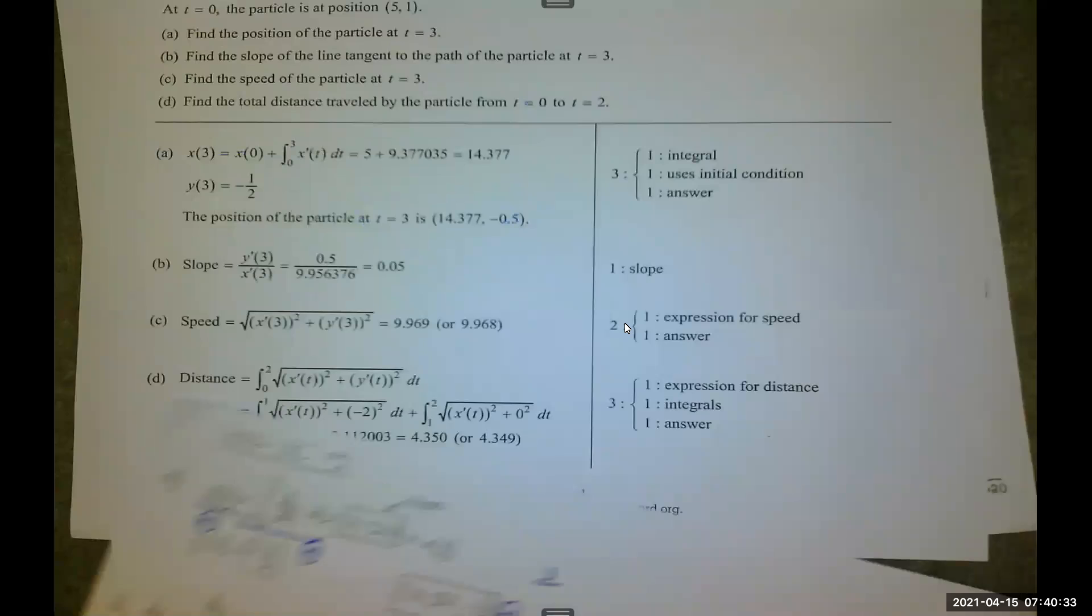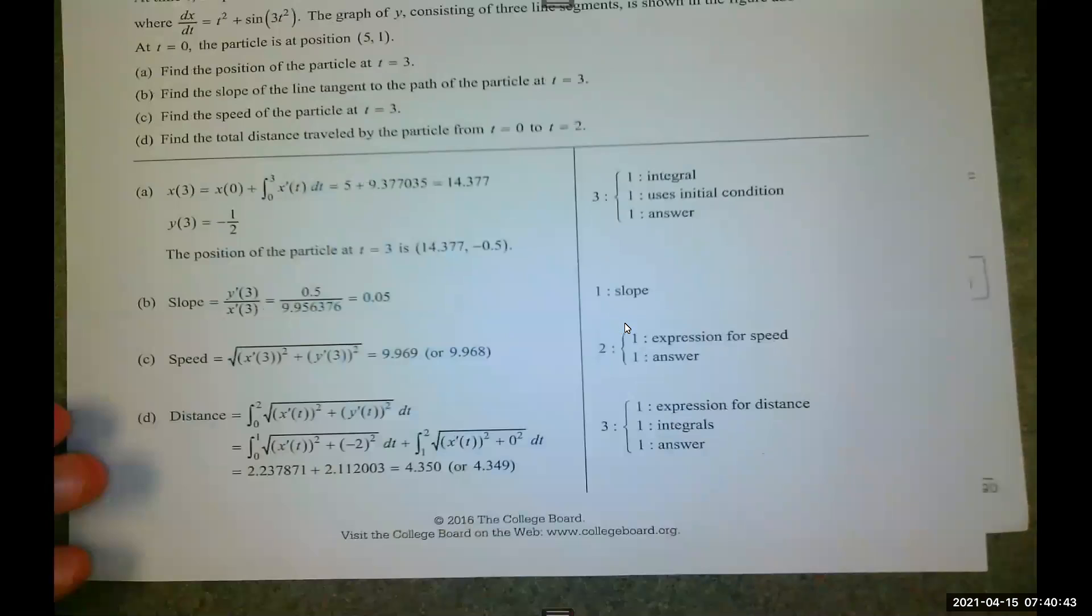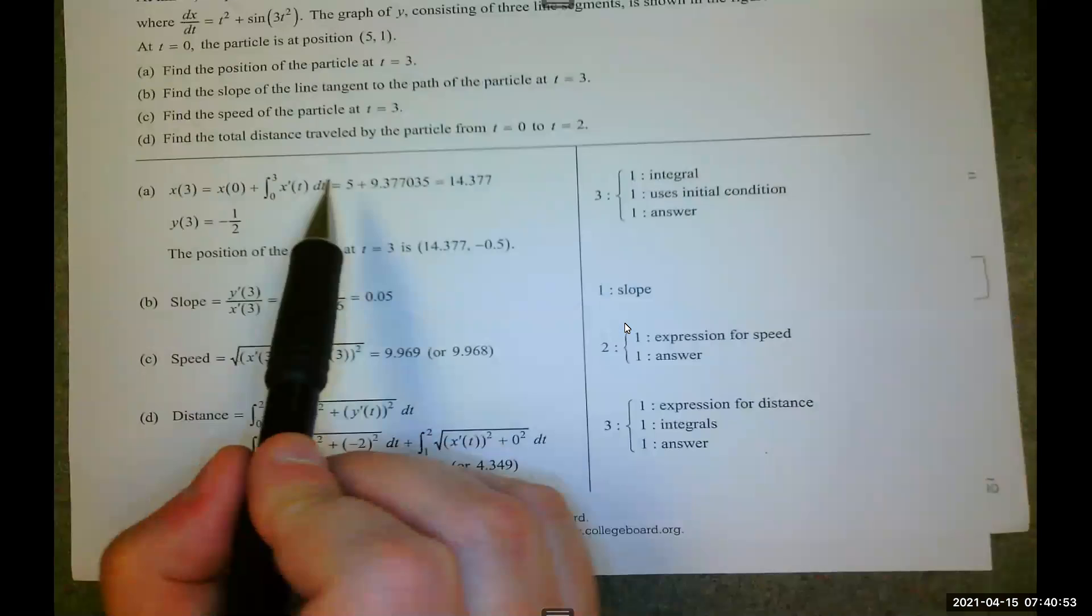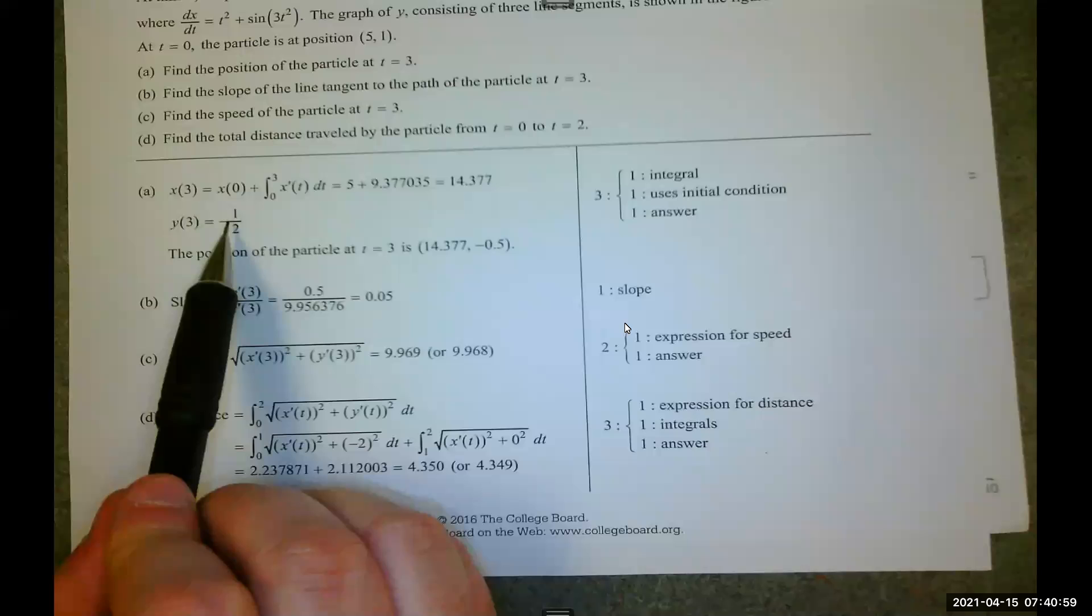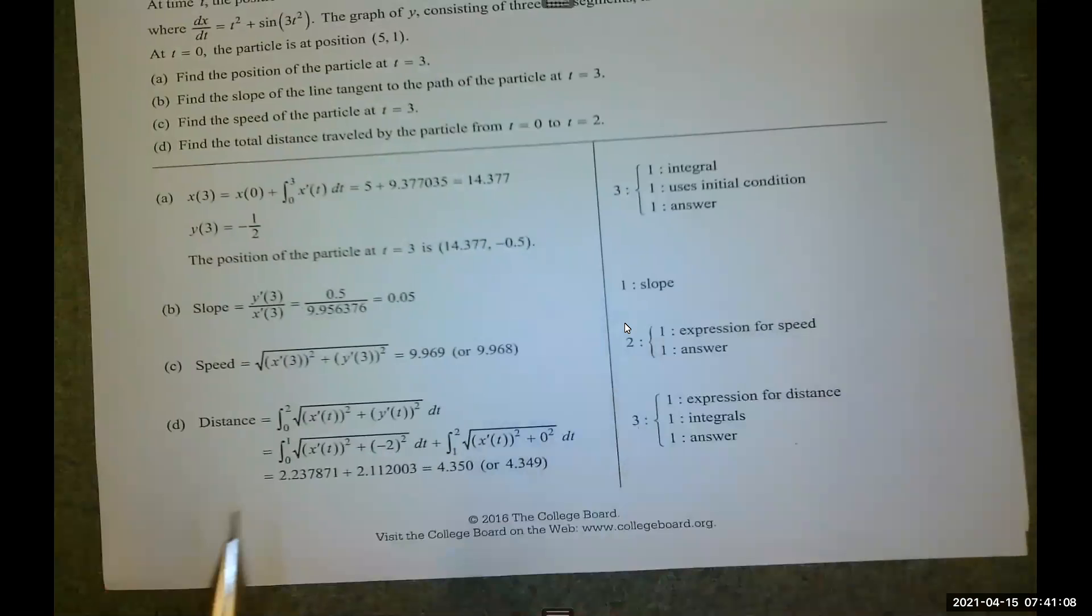On the scoring guidelines, you get one point for the integral statement. Notice how they switched to x prime of t. That's fine. You could do dx/dt like I did. So this integral statement uses the initial condition. You mention someplace that x of 3 is the integral plus x of 0. That gets you two points. Your third point is getting all the way to here. So evaluating correctly on the calculator, and noting from the graph that the value of the function is negative one half.